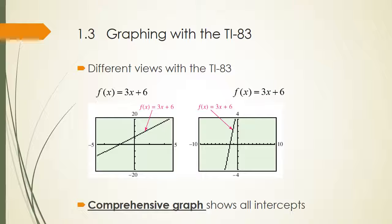When graphing lines or any function, it's important to get a comprehensive graph — showing all the important points. For a line, those are the x and y intercepts. Here the same function is graphed with two different windows. The first window, negative 5 to 5 for x and negative 20 to 20 for y, clearly shows where the line crosses both axes. The second window, negative 10 to 10 for x and negative 4 to 4 for y, only shows the x-intercept — so it's not a good window for this line.